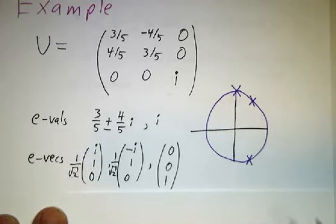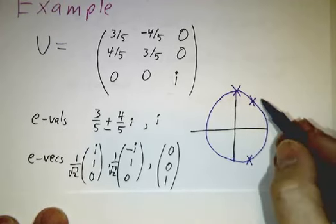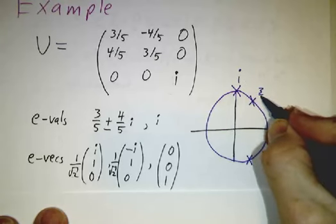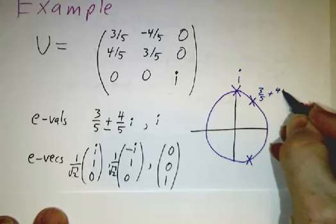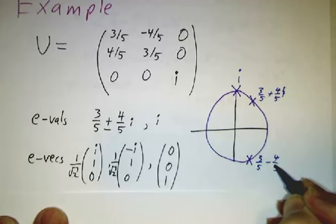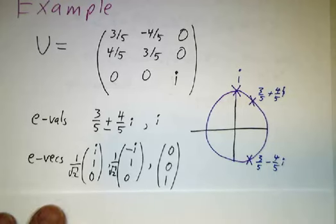Where do the eigenvalues live? They're on the unit circle. Here is i, here is 3 fifths plus 4 fifths i, here's 3 fifths minus 4 fifths i. They're all on the unit circle.